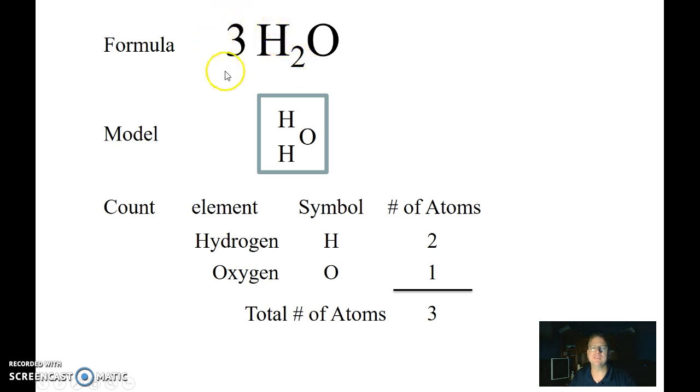Coefficient is the large number that comes before the formula. This number belongs to the whole formula. The little number, the subscript, tells me how many of that atom is in each molecule. The coefficient tells me how many molecules. So that three would tell me that there are three water molecules.